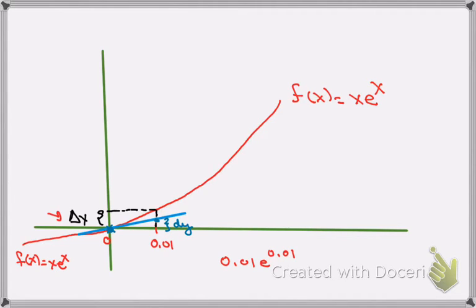And what we're doing is we're looking at the change in height on that blue tangent line, and that's dy. So we're calculating that dy and saying that it's approximately equal to the delta y.